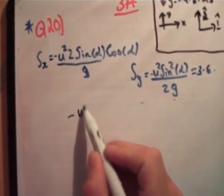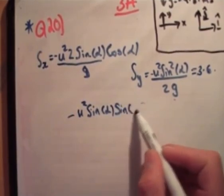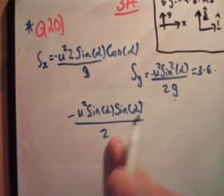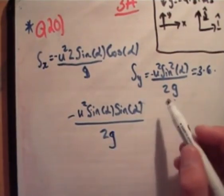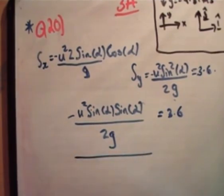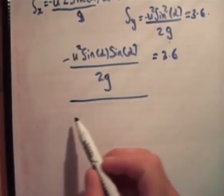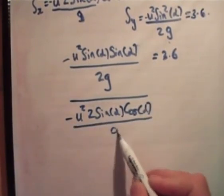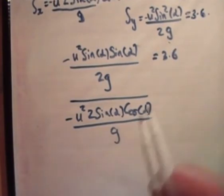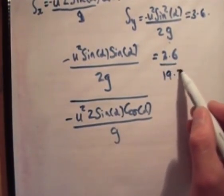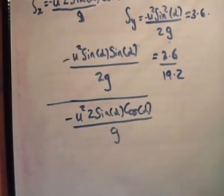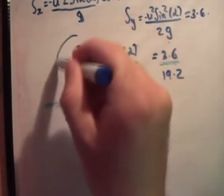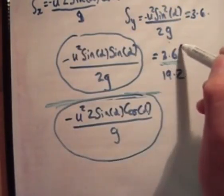So I have negative u squared sine alpha, sine alpha, I will say that's sine squared, just to make it easier, over 2g, like so. Oh, 2s, what's 2g? 2g. Alright, and we know that that is equal to 3.6, over, negative, u squared, 2, sine alpha, cos alpha, over g, which is equal to 19.2. Okay, so this, actually what I'll do is use a separate color for that one. Alright, so. Okay, so we're saying that this quantity here, divided by this quantity here, is equal to this quantity, divided by this one.